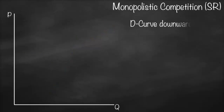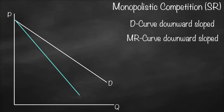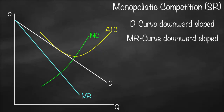In our third scenario, we again have a downward-sloped demand curve, a downward-sloped marginal revenue curve, a u-shaped average total cost curve, and a marginal cost curve. Remember that marginal cost intersects average total cost at its minimum.